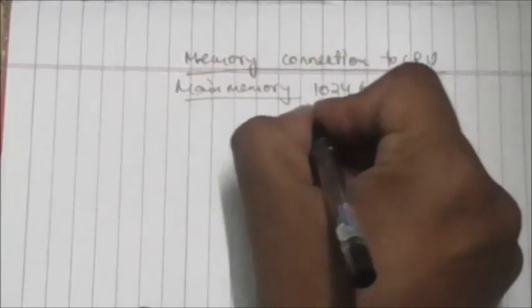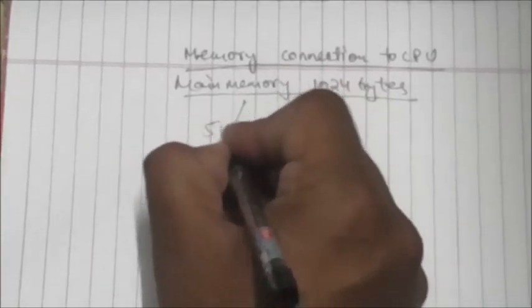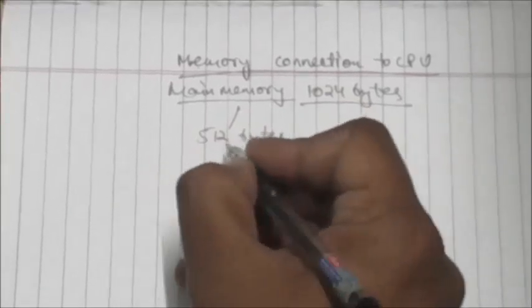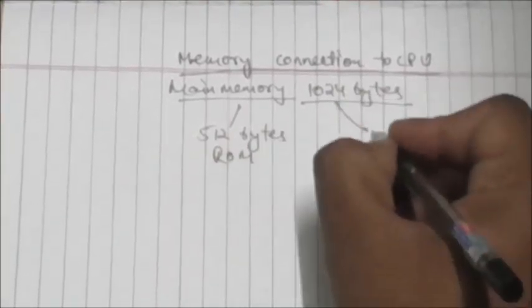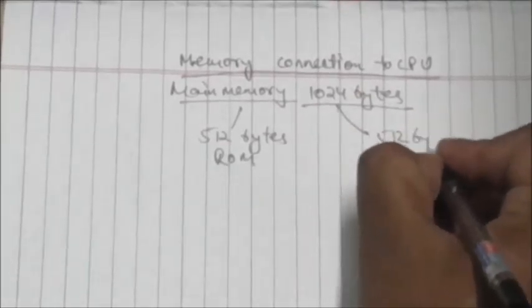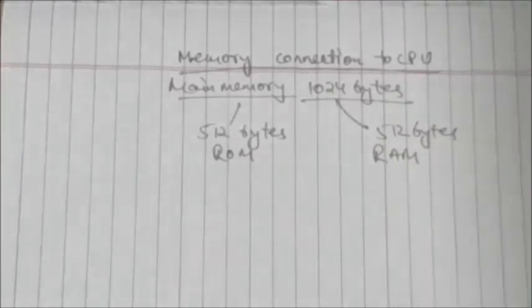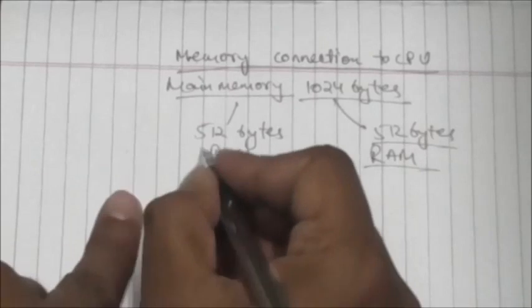Hello friends, welcome back. In this tutorial we will study the memory connection to CPU. Suppose we have a main memory of 1024 bytes, in which 512 bytes are ROM and 512 bytes are RAM.